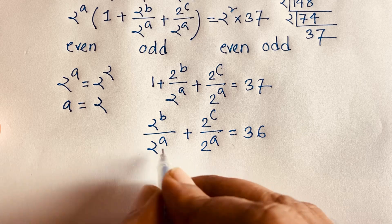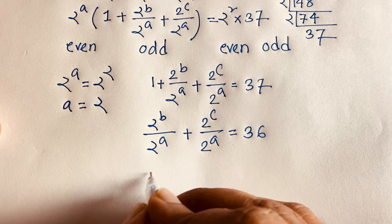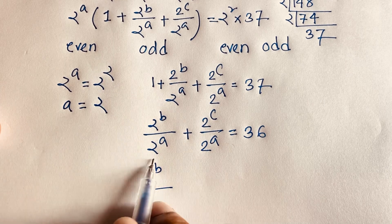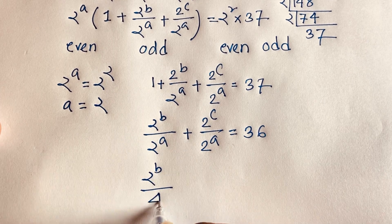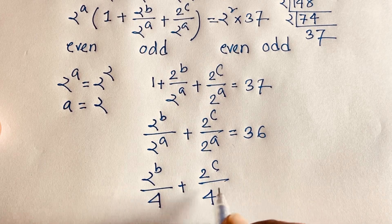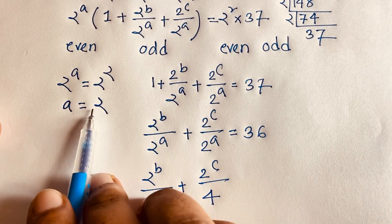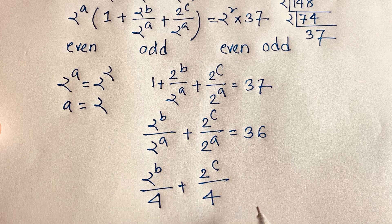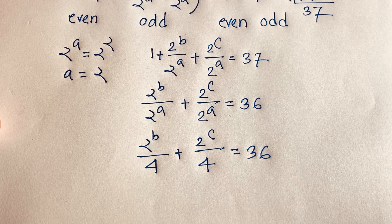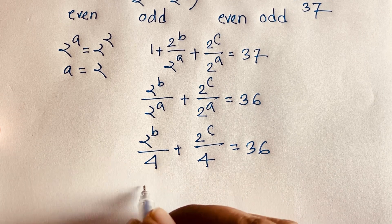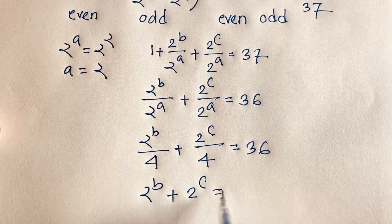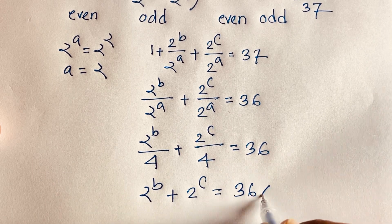Since a is 2, I can say 2^b over 2^2 — that is over 4 — plus 2^c over 4 equals 36. I multiply both sides by 4, so we find 2^b plus 2^c is equal to 36 times 4.